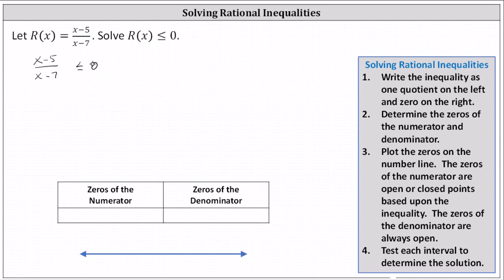To solve the rational inequality, we first want to verify it's in the correct form. The correct form is when we have a single quotient on the left and 0 on the right, which is our case. Step two, we determine the zeros of the numerator and denominator.